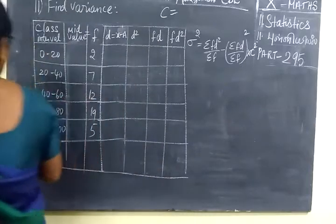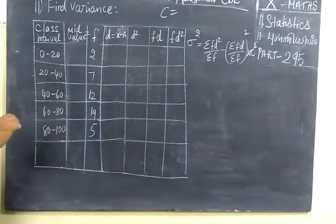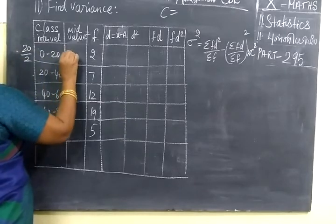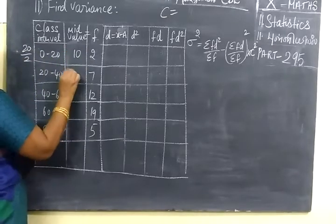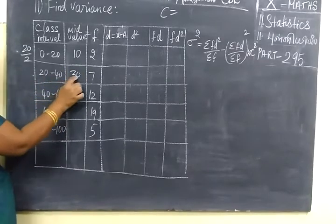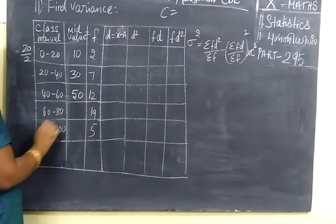Here it is given class interval. So you add upper limit and lower limit and divide by 2. So you get 10, then 30, add 60, 60 by 2, 30, 100, then 50.